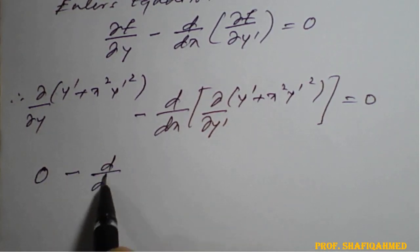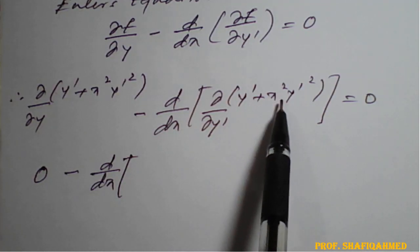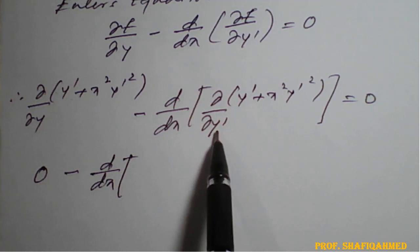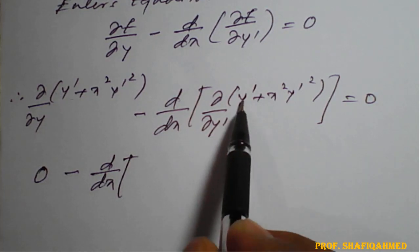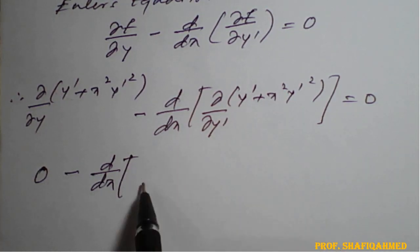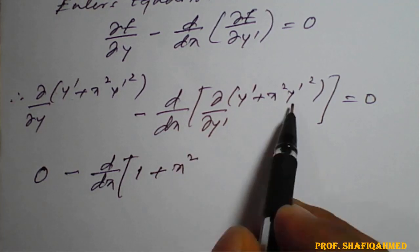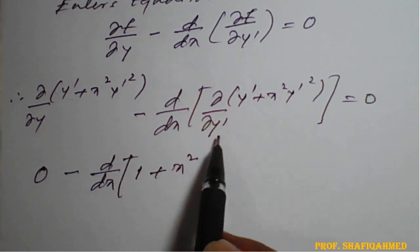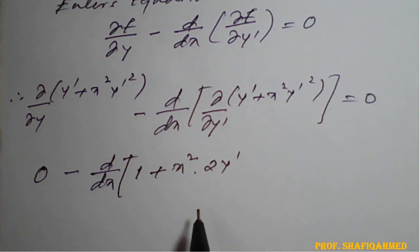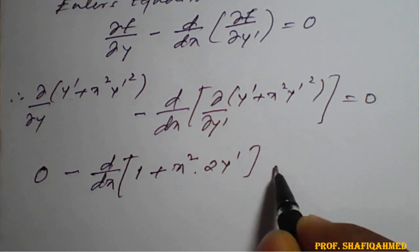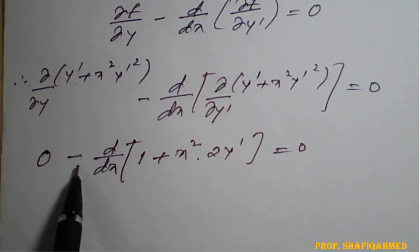So we have: 0 − d/dx[∂/∂y'(y' + x² y'²)] = 0. Now differentiating partially with respect to y': the derivative of y' with respect to y' is 1, x² is constant, and the derivative of y'² with respect to y' is 2y'. So we get 1 + 2x² y'.